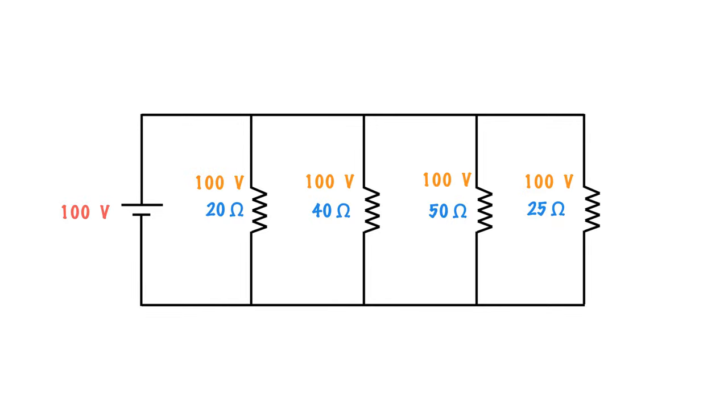Getting started, you notice we have 100 volts as a source. When resistors are in parallel, the voltage law states that the voltage across parallel branches will always be the same. So we've got 100 volts across each branch here, very easy to calculate.